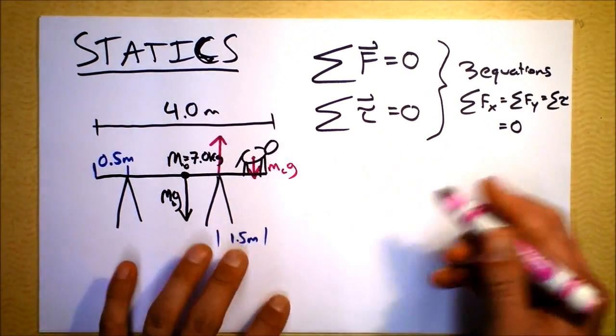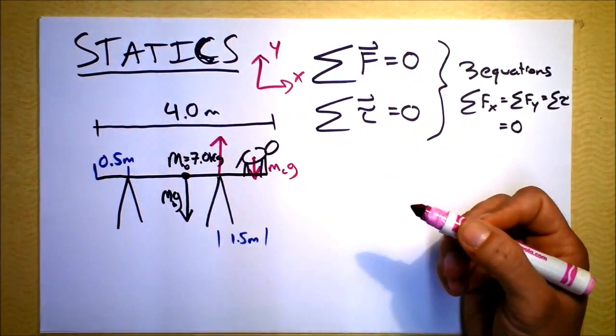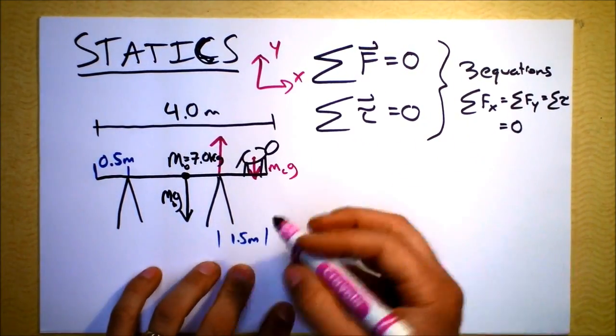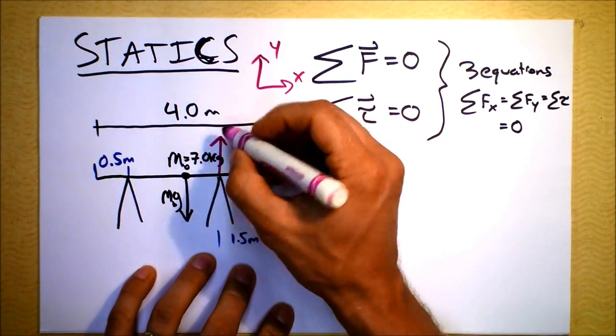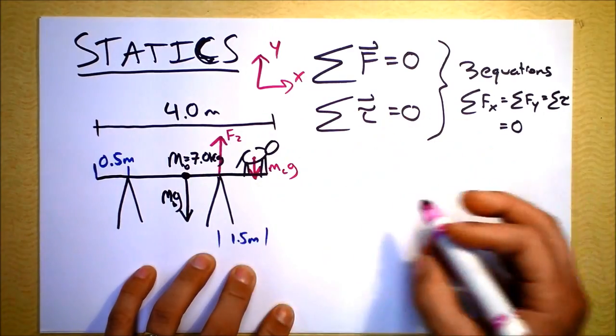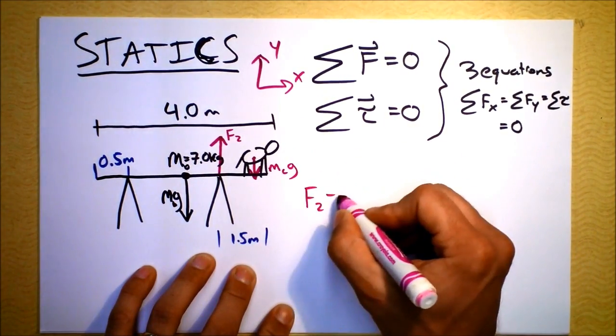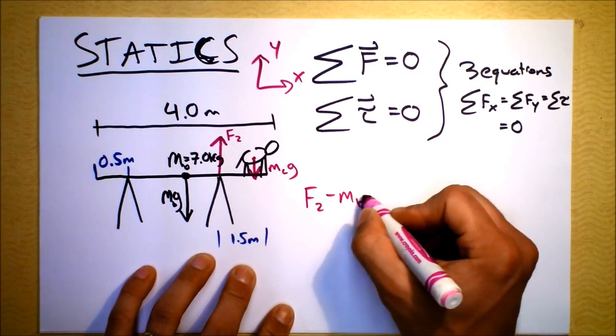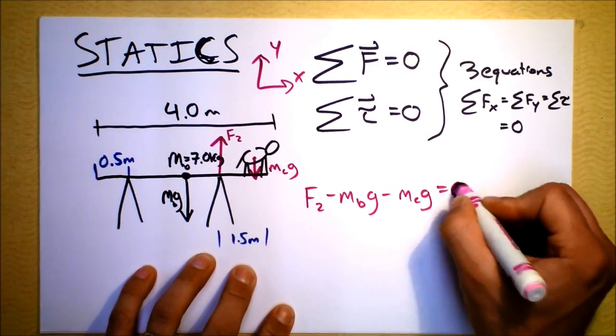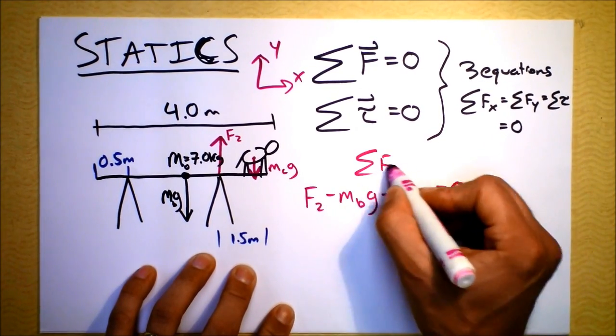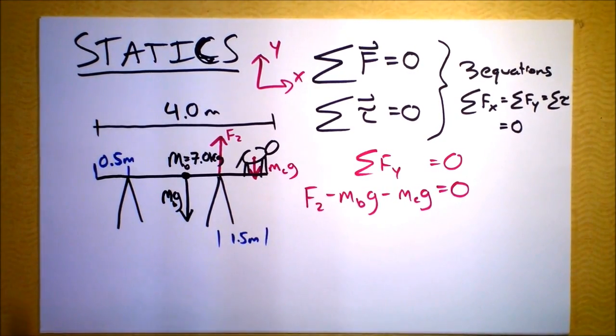Maybe we should use the net force in Y first. We're going to set up standard X and Y like this, and the net force in Y gives us our first equation: this force from the sawhorse, F2, minus the mass of the board times G minus the mass of the cat times G equals zero. This is the statement that the net force in the y-direction equals zero. There's our first equation.